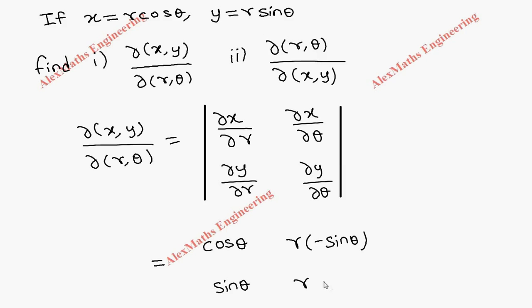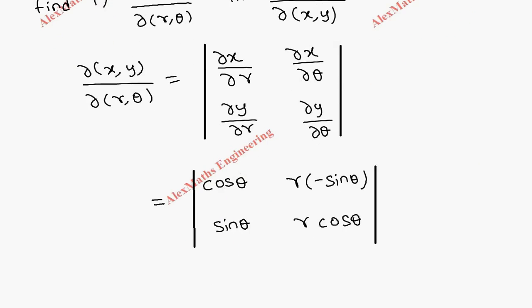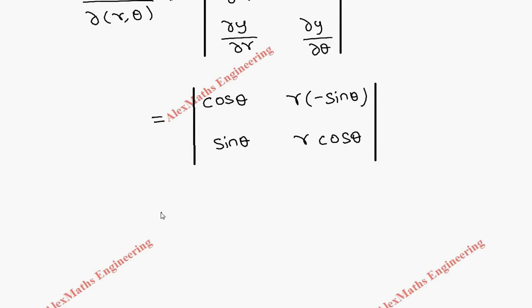So this 2×2 determinant we are going to evaluate. First we multiply the leading diagonal: r cos²θ, then minus the other diagonal gives -r sin²θ. Since we are subtracting, we can make it plus r sin²θ. When I take r common, this gives cos²θ + sin²θ which is 1. Therefore r × 1 = r is the answer.